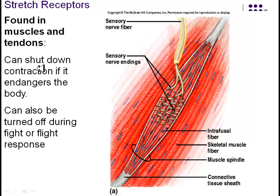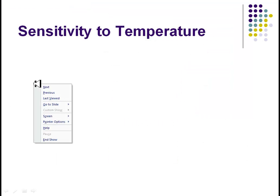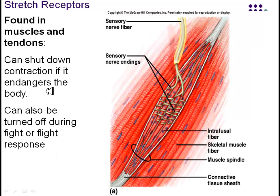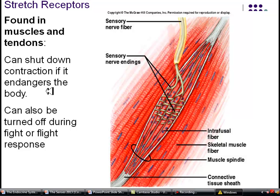Stretch receptors can shut down during the fight-or-flight response. Sometimes you can tear muscles or even break bones from over-contraction. Fight or flight also shuts down pain, so in instances where you're really scared, you may not feel those injuries.